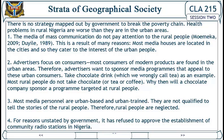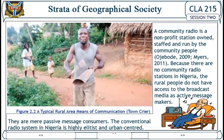Third, most media personnel are urban-based and urban-trained; they are not qualified to tell the stories of rural people, and therefore rural people are neglected. Fourth, the government has refused to approve the establishment of community radio stations in Nigeria. A community radio is a non-profit station owned, staffed, and run by the community people. Because there are no community radio stations in Nigeria, rural people do not have access to the broadcast media as active message makers.